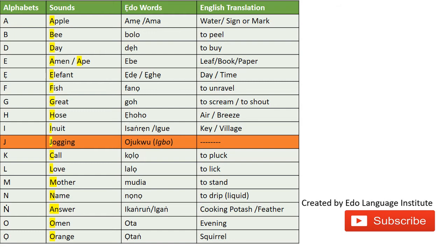Another example: 'EGUN' — 'EGUN' is the word for feather. Next, we have 'OTA' — like the O in 'omen' — 'OTA' is the word for evening. And then we have 'OTA' with the other O, which is the EDO word for screwing.